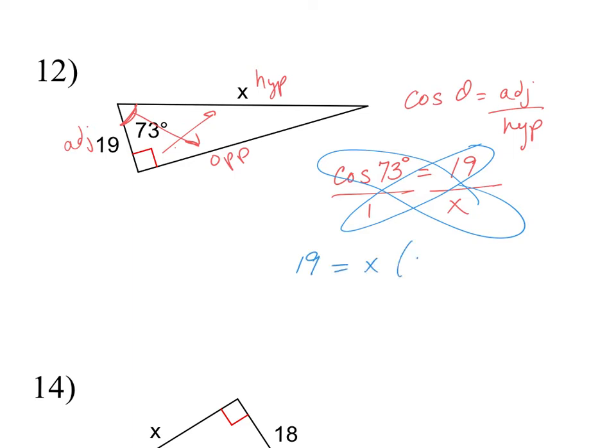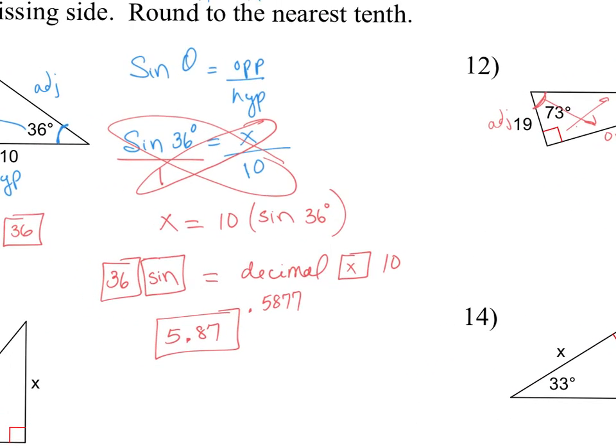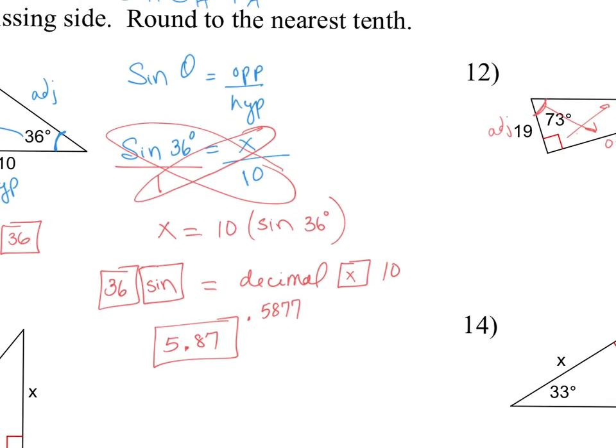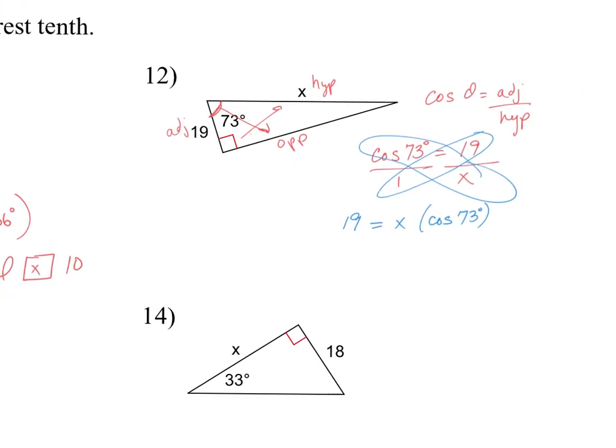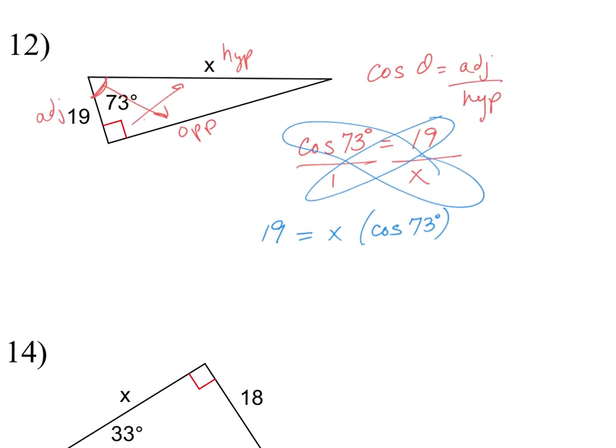And that will equal x times the cosine of 73 degrees. Now, you'll notice that this is a little different, because I don't have x by itself. In my previous example, when I cross-multiplied, I had x equals 10 times sine of 36. But I don't have that here. In every algebraic equation, we need x to be by itself to fully solve our equation. So to do that, we're going to treat the cosine of 73 just like any coefficient, and we're going to divide both sides of my equation by the cosine of 73. Because anything divided by itself is 1, so these cancel out, giving me x equals 19 divided by the cosine of 73 degrees.